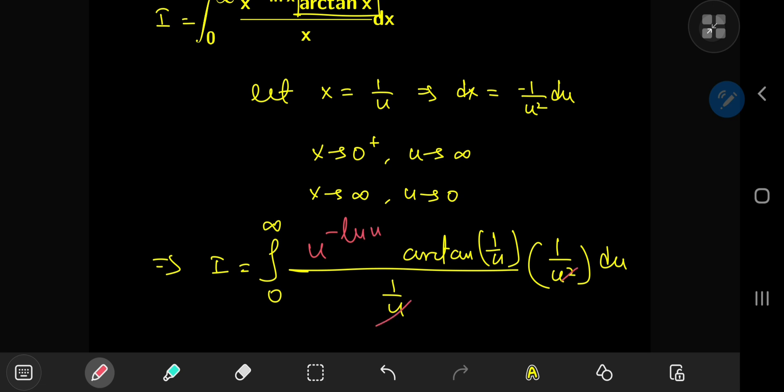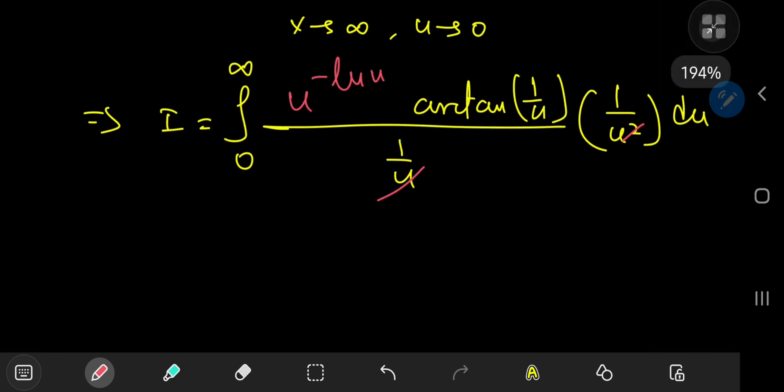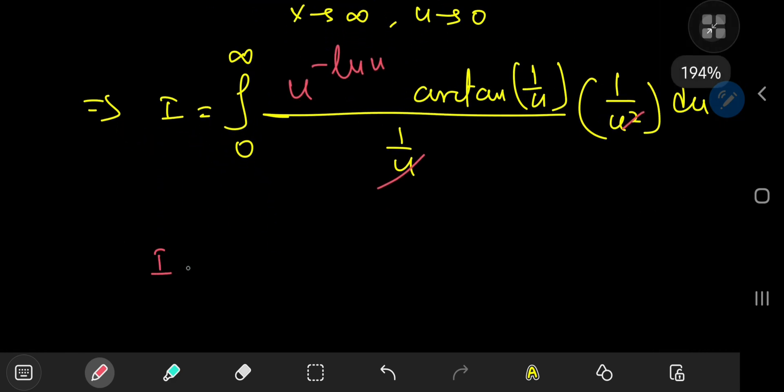And one of the u's canceled out over here as well pretty nicely. So finally, we can write our integral i as the integral from 0 to infinity of u to the negative log u times the inverse tangent of 1 by u divided by u du.